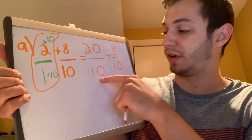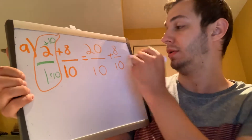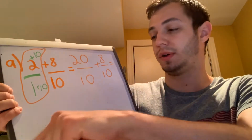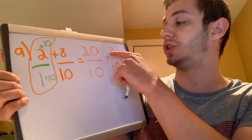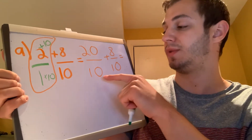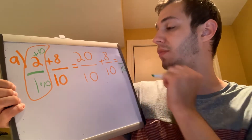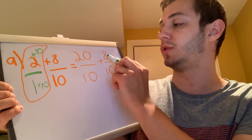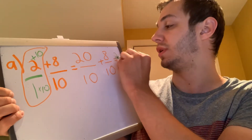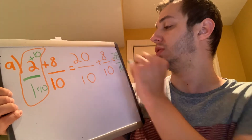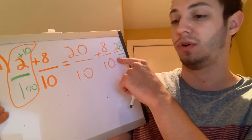Now both of my fractions have the same bottom number which means I can add them. Remember only my top number will change; my bottom number will stay the same. So the 10 will stay the same for my bottom number, and then for our top number we're just going to add 20 and 8 which gives us 28. So our final answer is going to be 28 over 10.